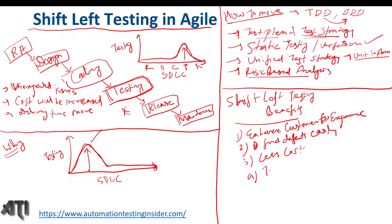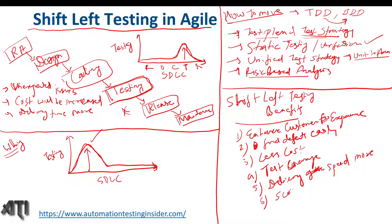Test coverage also increases because we have started testing from the beginning, so coverage will be more. Delivery speed of the software will be greater. There is also scope for automation, because since we start testing from the beginning of the SDLC, the build becomes stable at that point in time, which enhances the scope for automation.